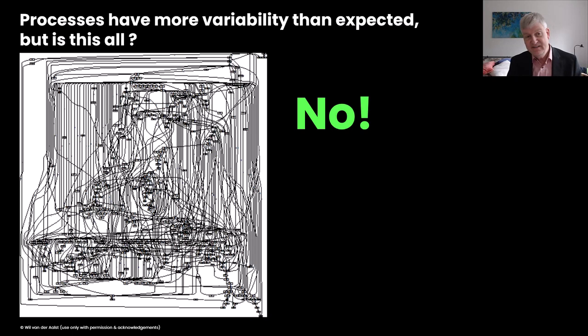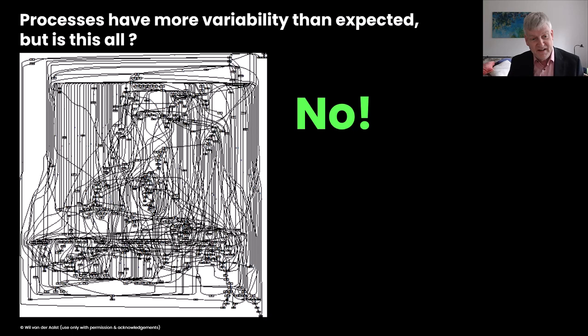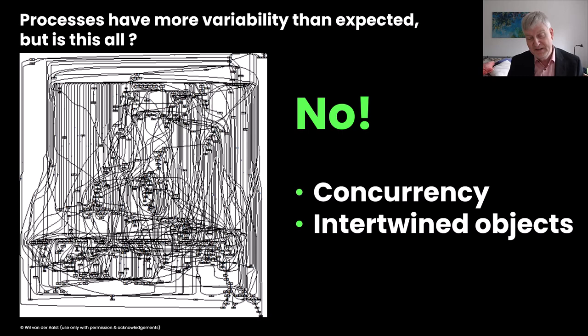These models are called directly-follows graphs — models where nodes represent activities and connections represent that one activity is followed by another. You can also think of this as a transition system or Markov chain where nodes are the activities. One of the central messages of this talk is that yes, there is a lot of variability in these processes, but it is partly caused by the way we are visualizing and mining them. Part of the spaghetti-like structure is caused by the fact that we use DFGs that focus on a single case notion.